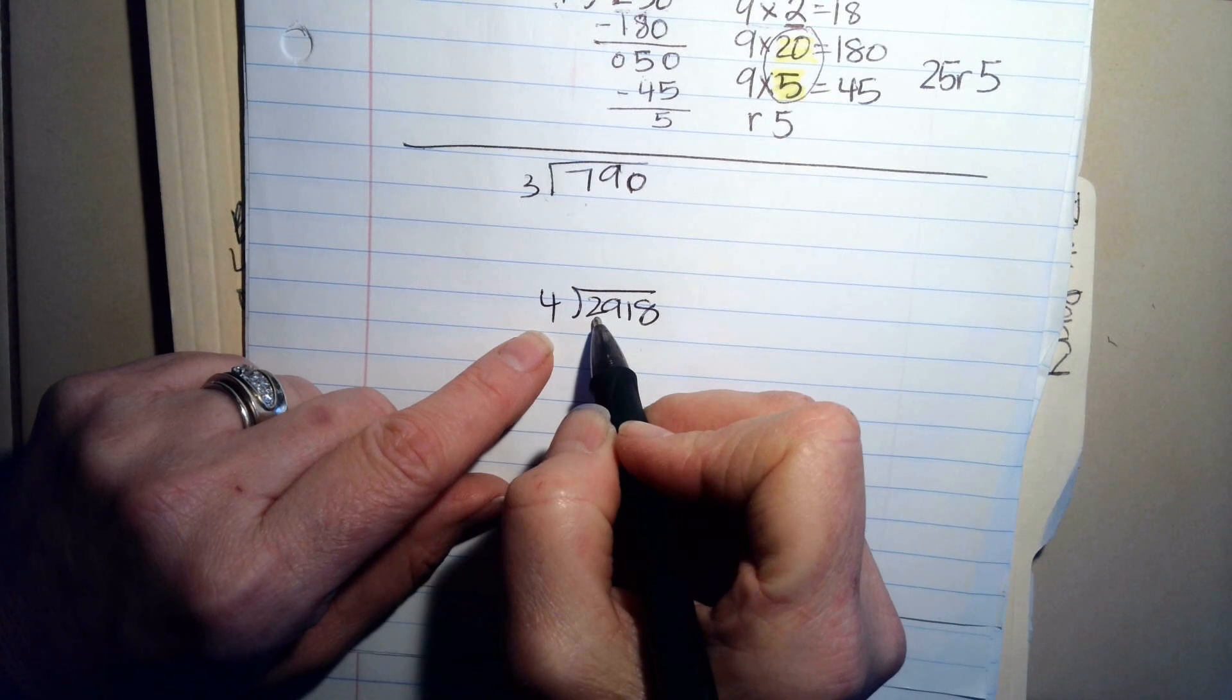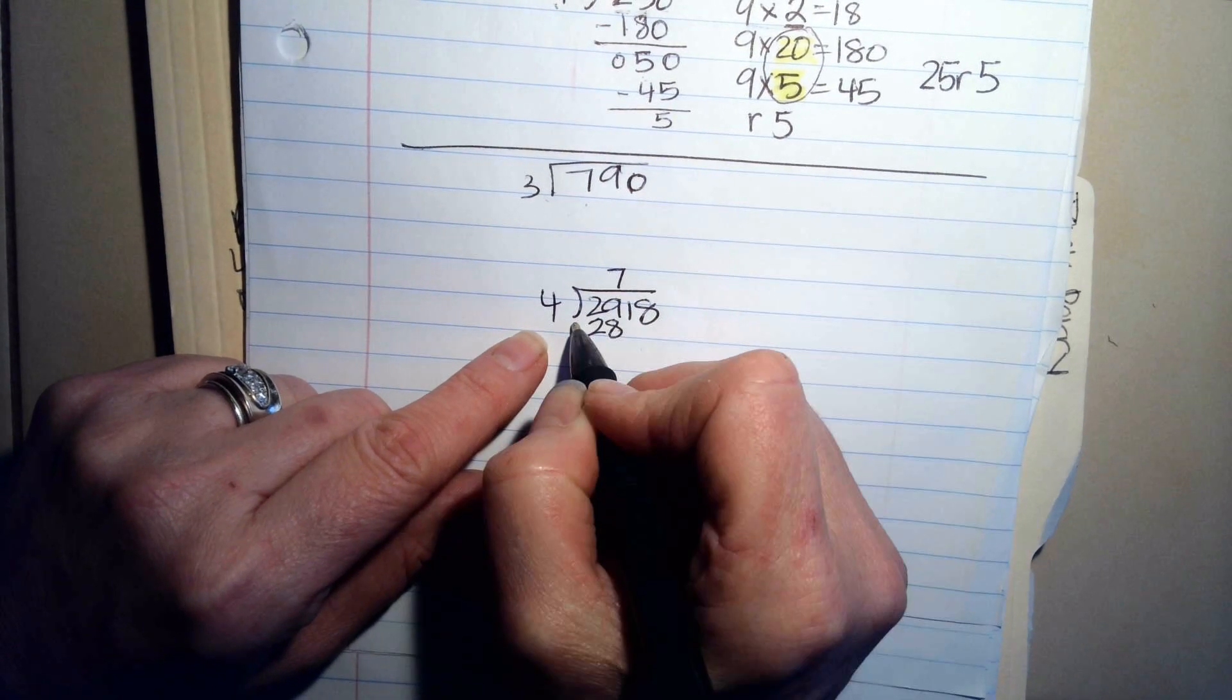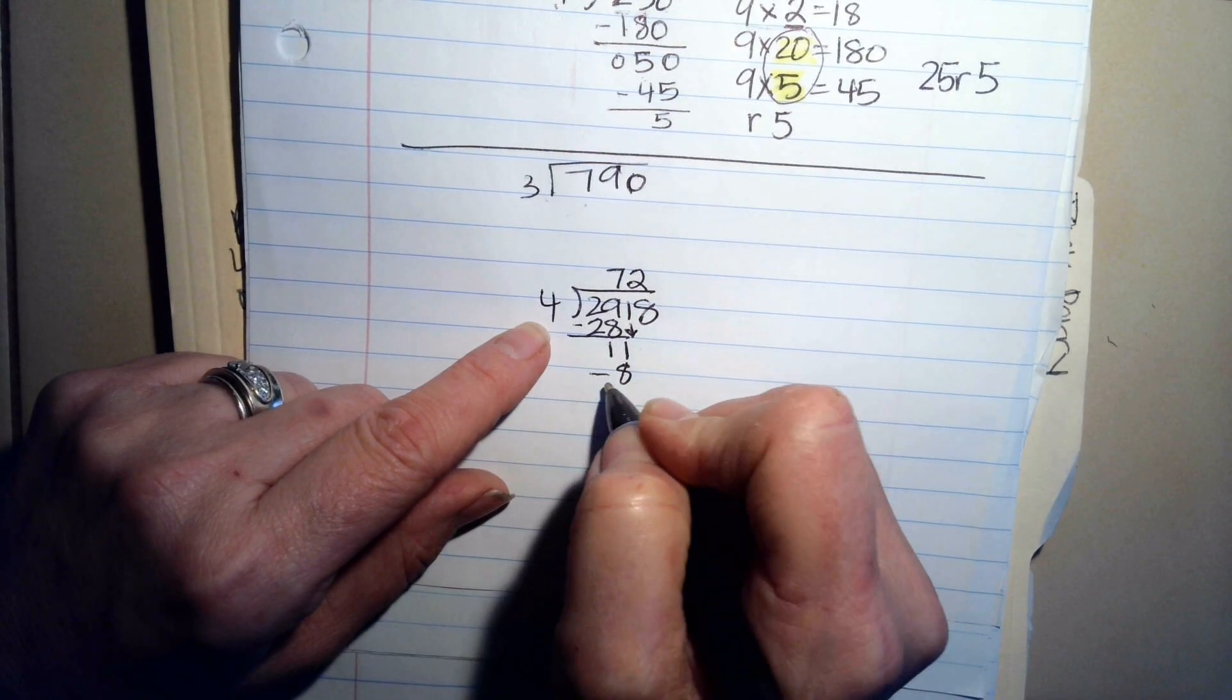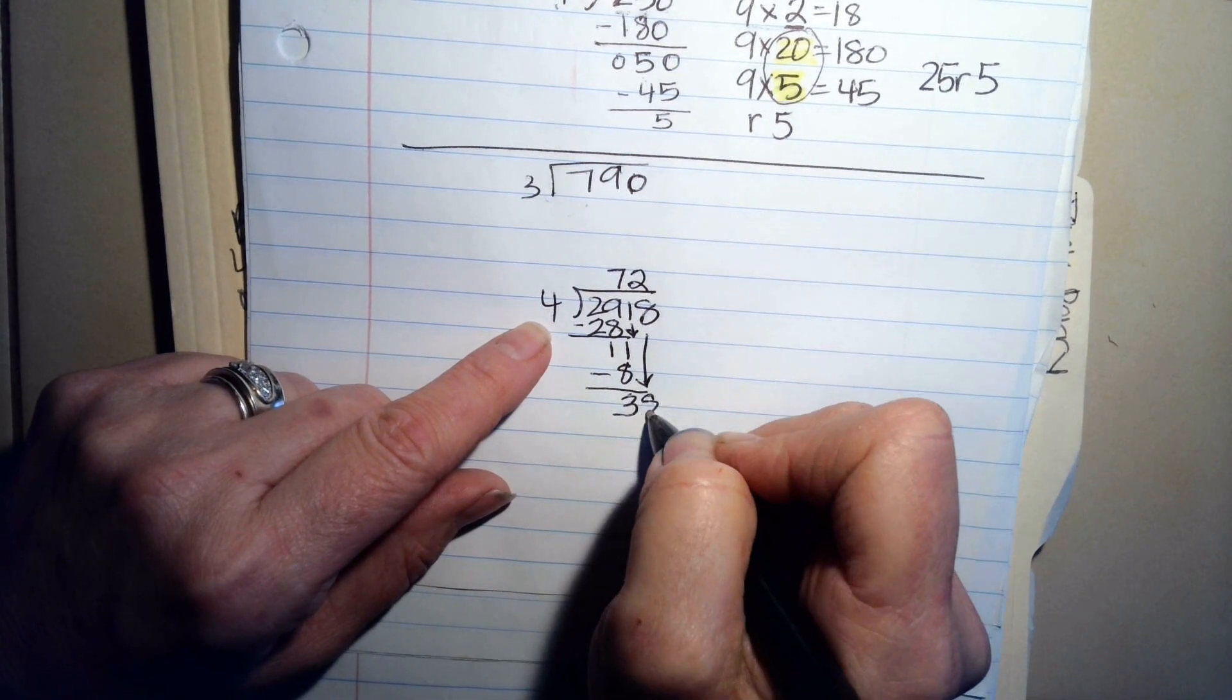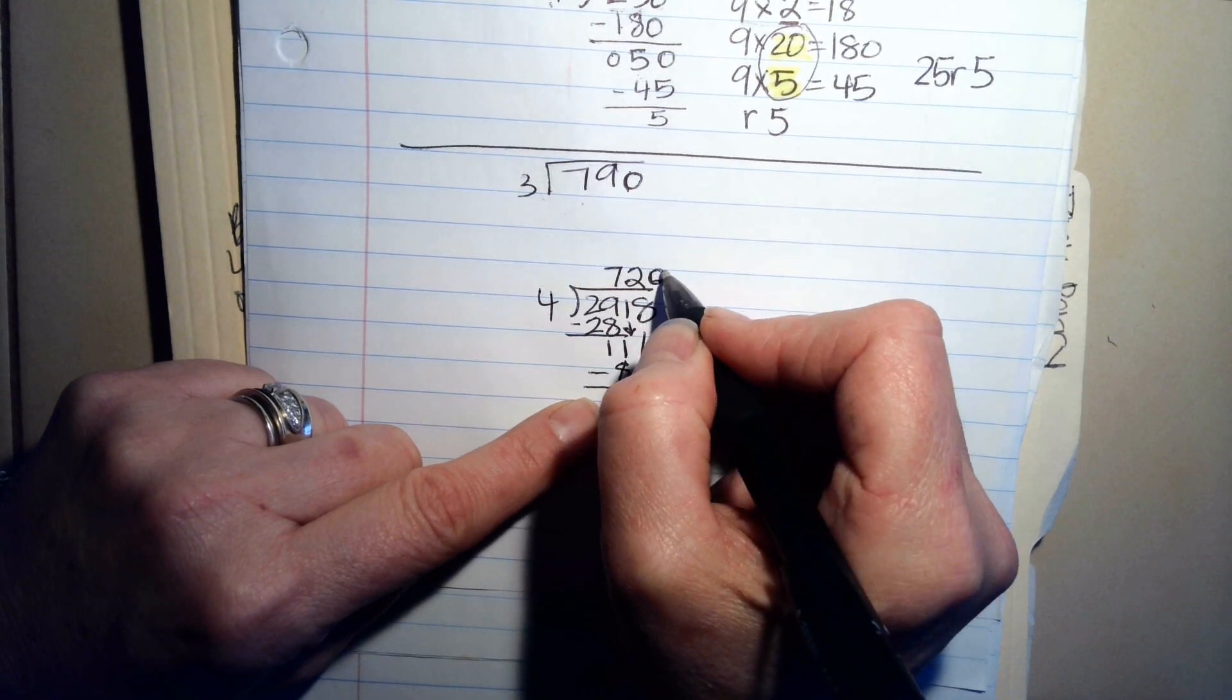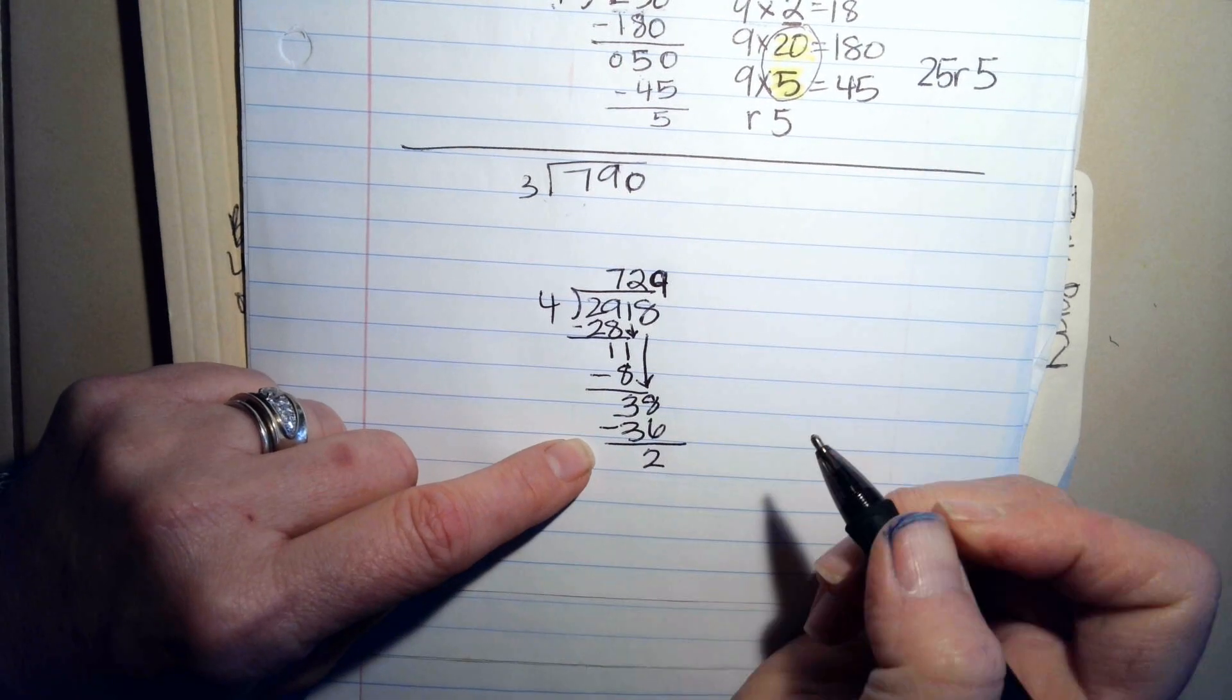So you're going to say 4 goes into 2, 0 times. 4 goes into 29, 7 times. 7 times 4 is 28. 29 minus 28 is 1. Then you bring down this 1. 4 goes into 11, 2 times. 4 times 2 is 8. Then you do 3 because 11 minus 8 is 3. Bring down the 8. 4 goes into 38, 9 times. 38 minus 36 is 2. So it's remainder 2.